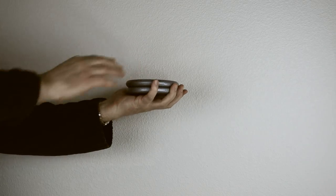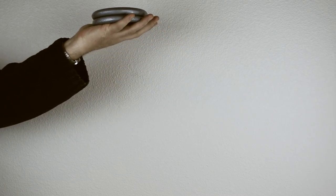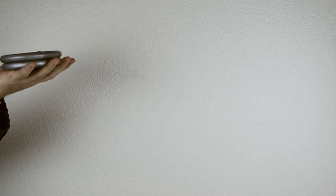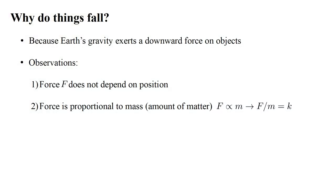If I add a second weight, I need to exert more force to keep the combined weight from falling. A reasonable conclusion is that gravitational force is proportional to the mass, the amount of matter. We write F is proportional to m, or F/m equals the constant k.